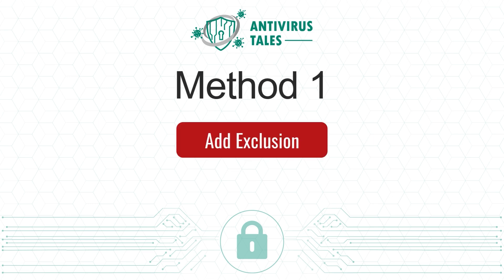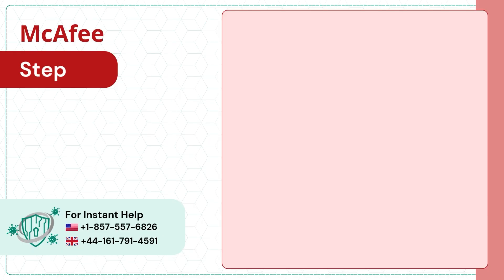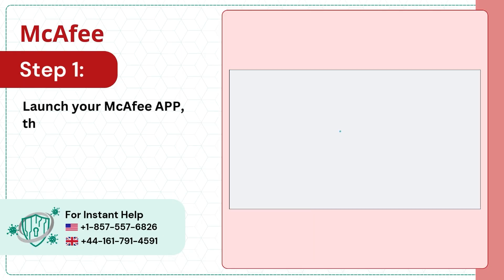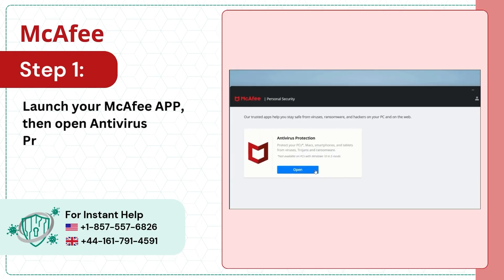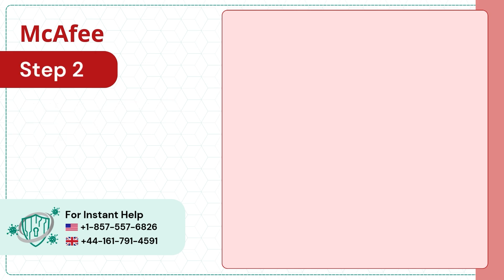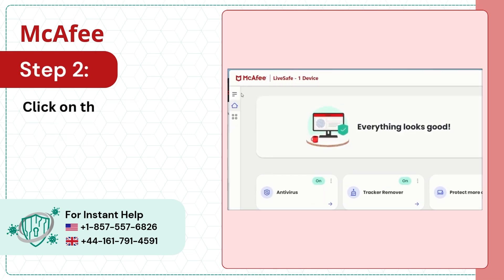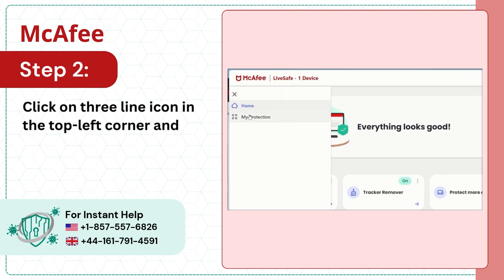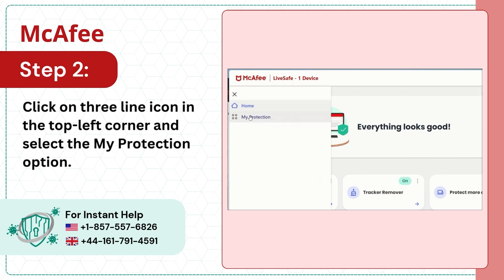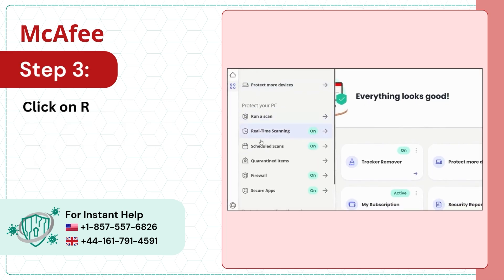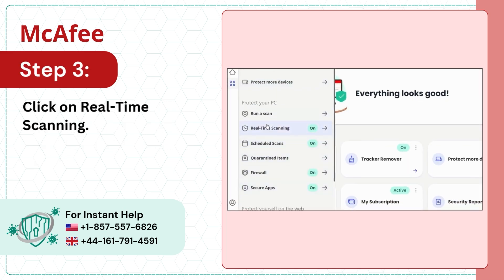Add Exclusion. Step 1: Launch your McAfee app and open Antivirus Protection. Step 2: Click on the 3-line icon in the top left corner and select the My Protection option. Step 3: Click on Real-Time Scanning.